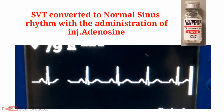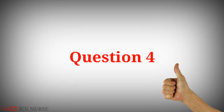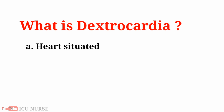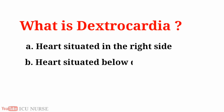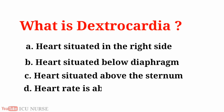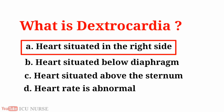What is dextrocardia? A. Heart situated in the right side, B. Heart situated below the diaphragm, C. Heart situated above the sternum, D. Heart rate is abnormal. And the answer is A. Heart situated in the right side.